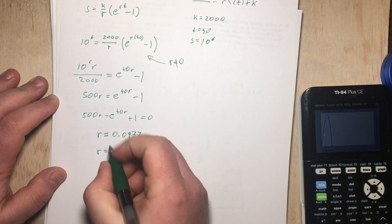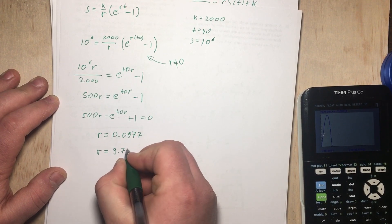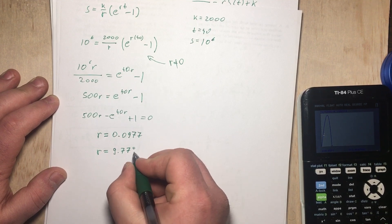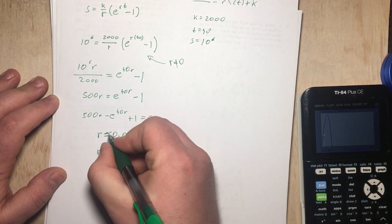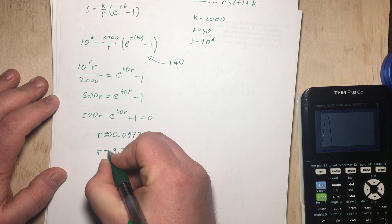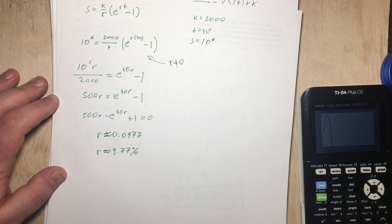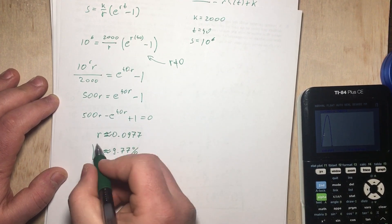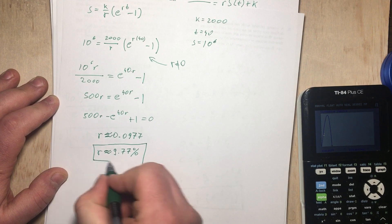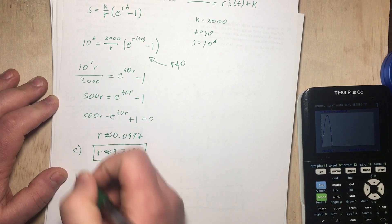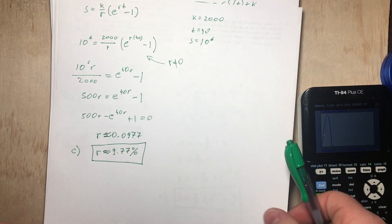Okay, in other words, R is going to be 9.77%. And again, this is an approximate, it's not going to be an exact value. Okay, so this is the answer to part C.